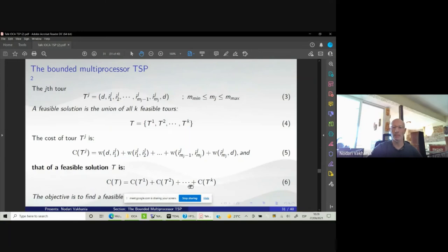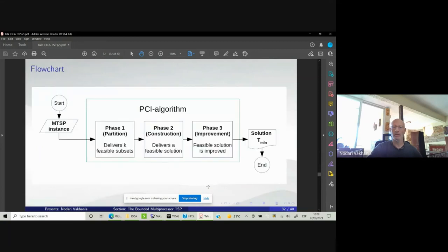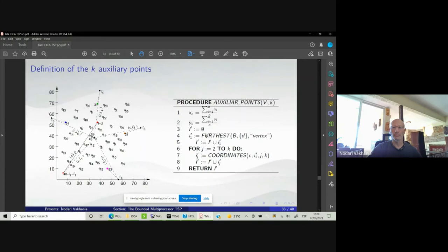In this problem, we have to minimize the sum of the costs. This PCI algorithm that we call 4M for bounded MTSP problem somehow extends the TSP algorithm, the insertion method that we have just described. The difference is that at phase one, we have to partition the whole set of points. Then at phase two, we construct a feasible solution. And at phase three, we improve it. How we carry out the partition.